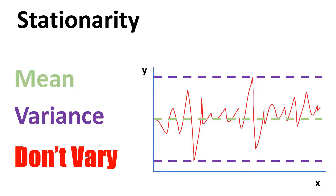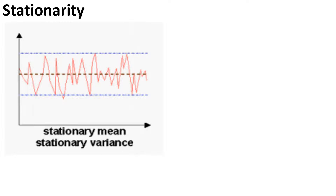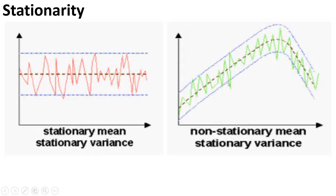Here are some more examples. In this first image, you see stationary mean and stationary variance — both are constant and not changing over time. The line is straight, so the mean of the dependent variable remains approximately the same, and the variance also remains the same.